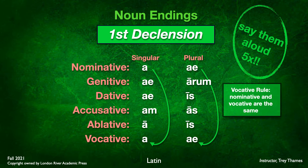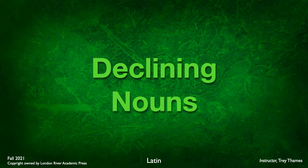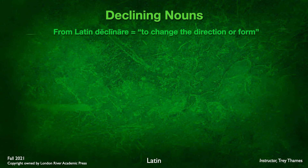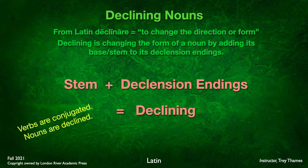How do we decline a noun? Just as we conjugated verbs by taking the stem and adding the present tense endings — o, s, t, mus, tis — we also decline nouns by taking the stem and adding these noun endings. The word 'declining' comes from the Latin declinare, meaning to change direction or change form. So declining is changing the form of a noun by adding its stem to its declension endings. Verbs are conjugated; nouns are declined.